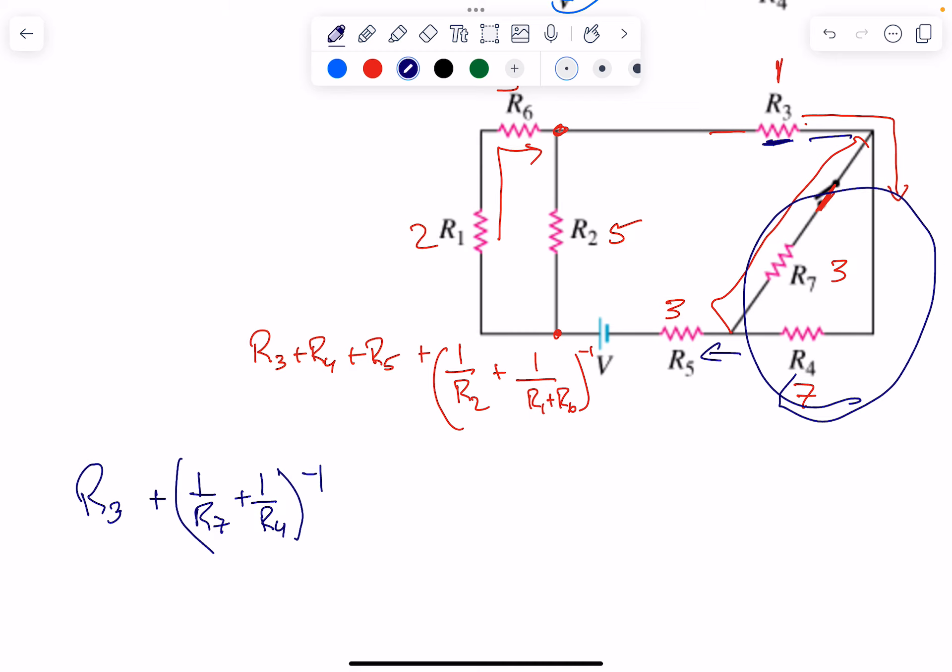Plus we do this whole thing again: (1/R2 + 1/(R6 + R1))^-1. That's how you solve that problem.